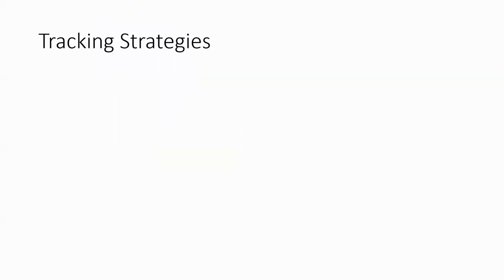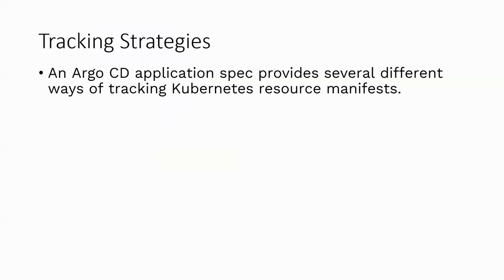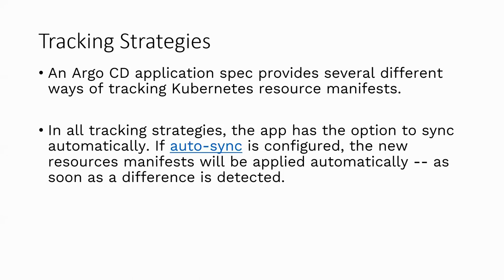Tracking strategies and why they're important: as we've seen, it's very important whenever we are doing any kind of deliverables — on-premises, internal users, or clients. When it comes to ArgoCD, it provides several ways to track the Kubernetes resource manifest. Always be sure about whether auto sync is enabled in your environment.